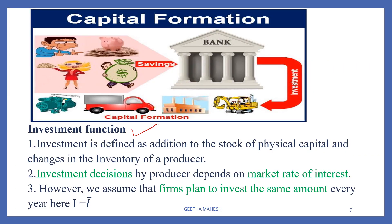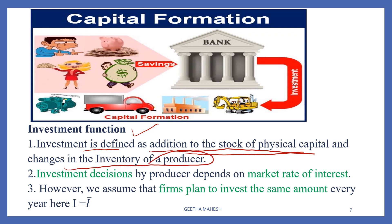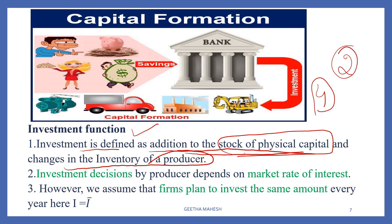Next is investment. Investment means addition to the stock of physical capital and changes in the inventory of a producer. For example, if a factory has 4 machines and adds 2 more machines, that addition is investment.